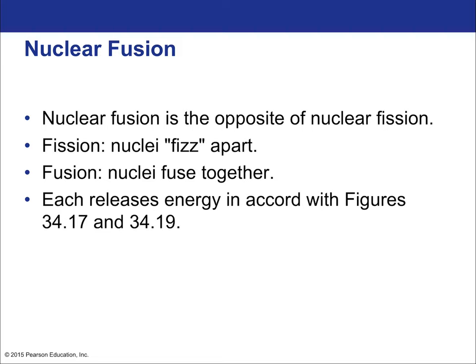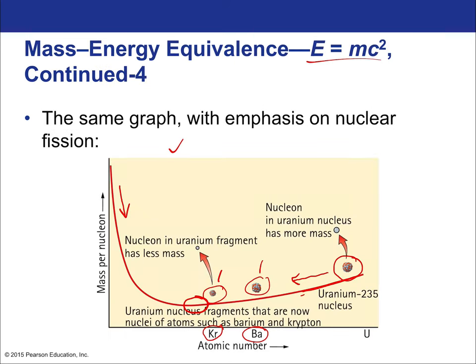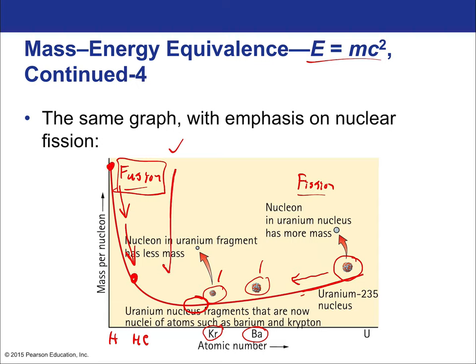Nuclear fusion is the opposite of fission: instead of breaking nuclei apart, you fuse them together — and each releases energy according to the mass-per-nucleon figure. Fusion operates on the steep left side of the curve near hydrogen. Fusing hydrogen isotopes into helium produces far more energy per event than any fission reaction because the change in mass per nucleon is incredibly dramatic on that side. Fusion is way more energetic than fission per nuclear event.